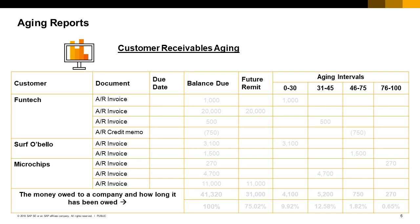A similar aging report with the same structure exists for vendors. When Maria wants to see open AP invoices for vendors, she generates the Vendor Liabilities Aging Report. After generating the aging report, either for customers or for vendors, you can email the respective aging data to the relevant business partners.